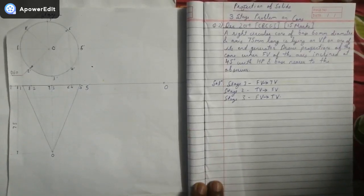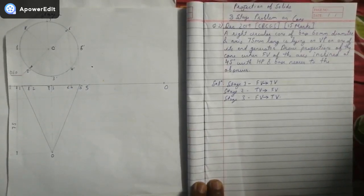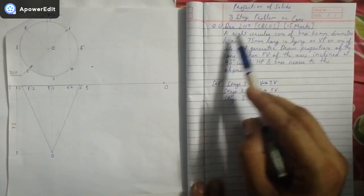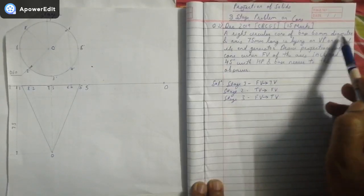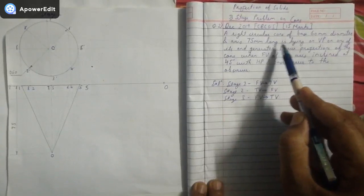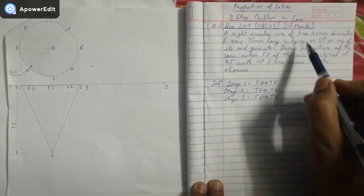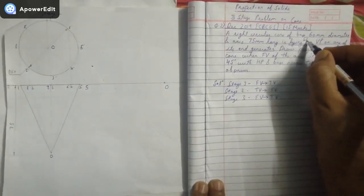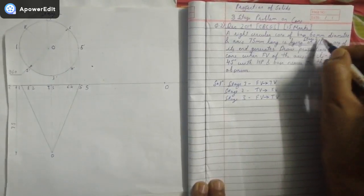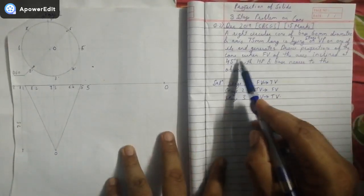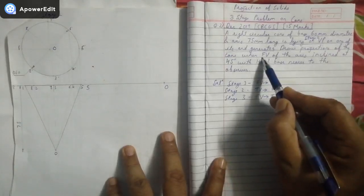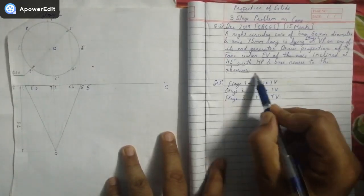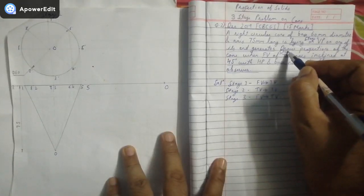Good evening, this is Shivam Shukla. Here I am to draw a problem on projection of solids — a three-stage problem on a cone. The question statement goes: a right circular cone of base 60 mm diameter and axis 75 mm long is lying on VP on one of its end generators. The front view of the axis is inclined at 45 degrees with HP and the base is nearer to the observer.